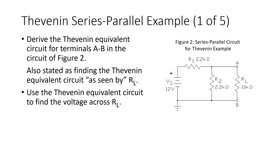Let's look at an example. The circuit of figure 2 is a simple series-parallel circuit with a resistor RL connected between terminals A and B. We're going to derive the Thevenin equivalent circuit for the terminals A and B in that circuit — or, as we'll say, the Thevenin equivalent circuit as seen by RL — and then use it to find the voltage across RL.